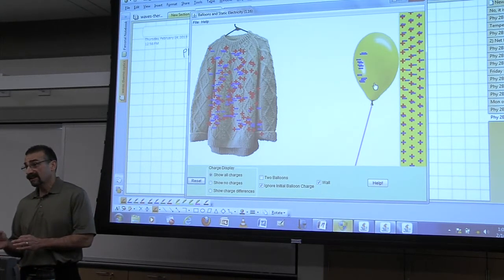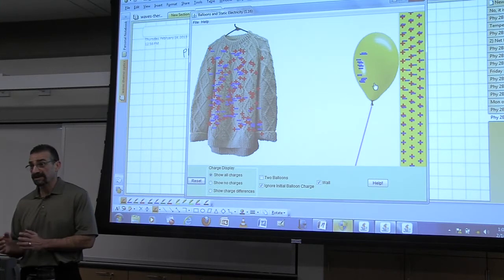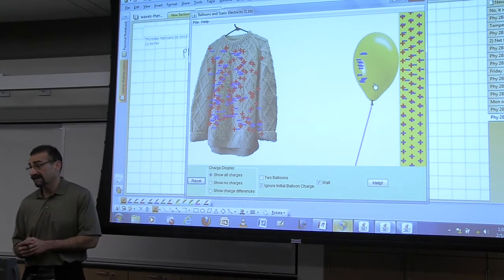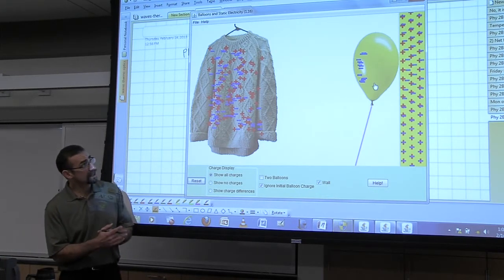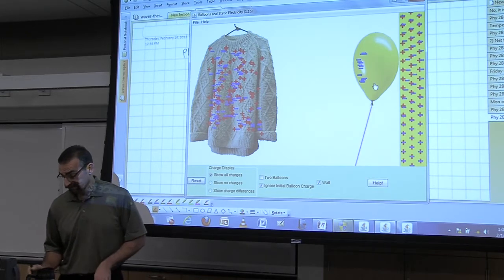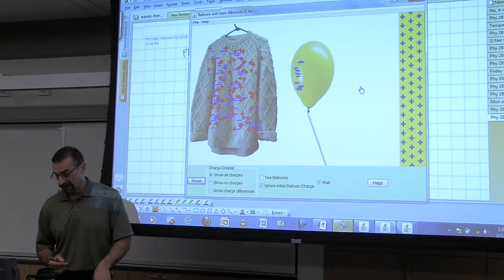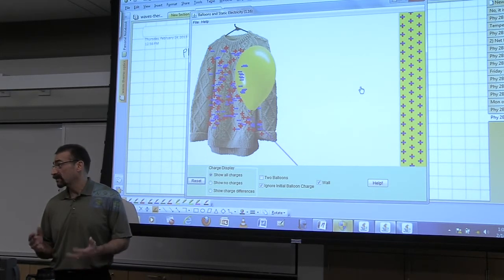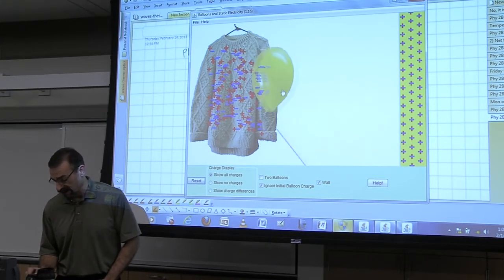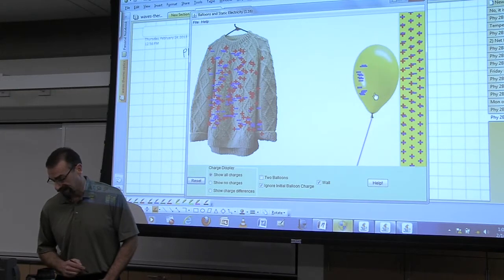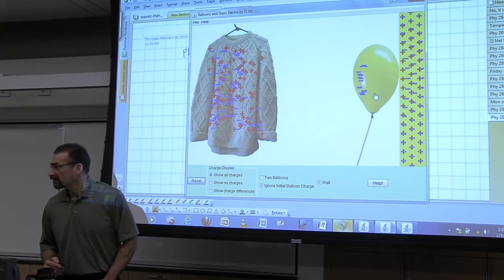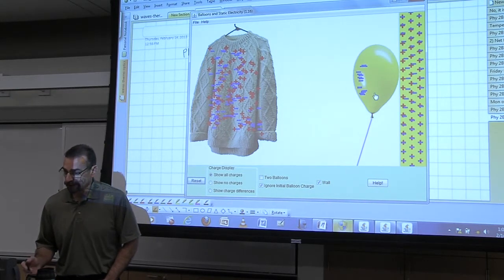With electricity, closeness counts, because that electric force is heavily dependent on distance. And so we get an attractive force there. But it's a bigger force to the sweater because those are opposite charges. This is just an induced charge on the wall. Okay? Maybe you didn't need a simulator for that.